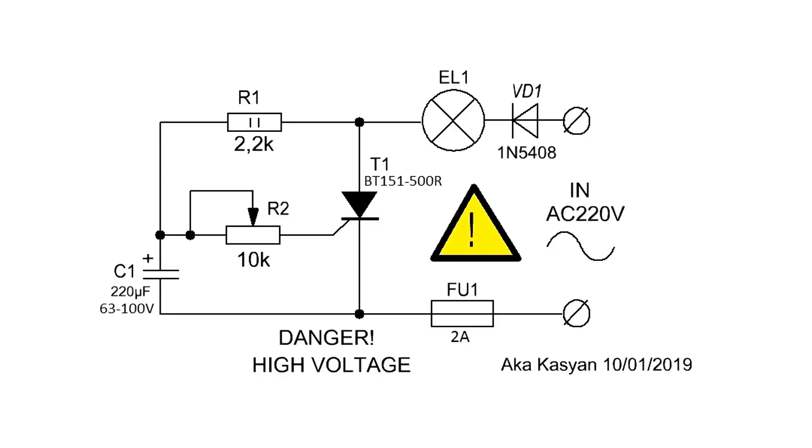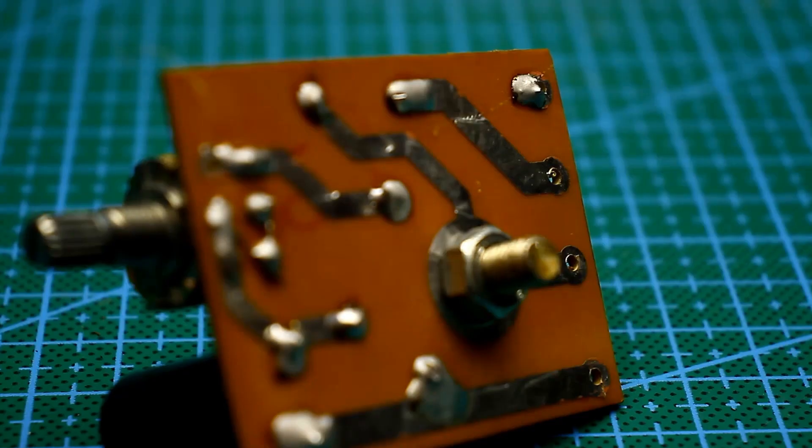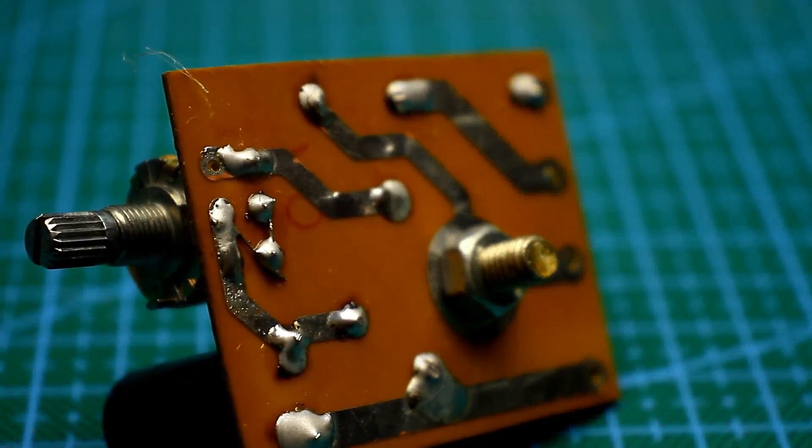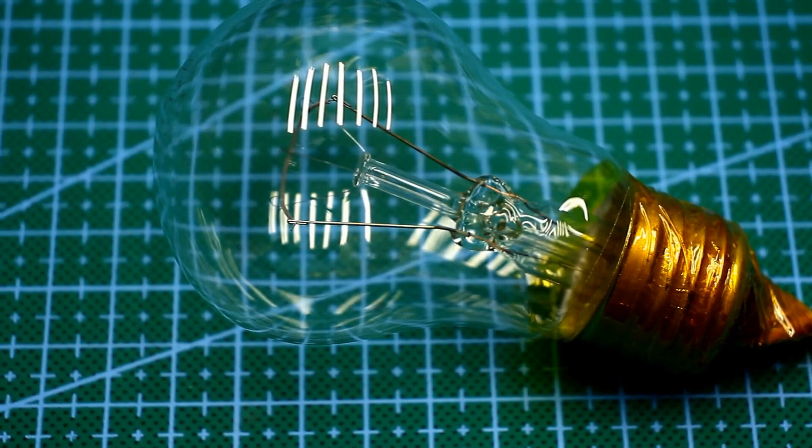The mains voltage is supplied to the circuit through the rectifier diode and the incandescent lamp. It's easy to guess that the load in this circuit is connected in series. And even if the circuit is assembled incorrectly or there are faulty components, there won't be any fireworks. Instead, the lamp will glow brightly.